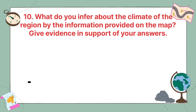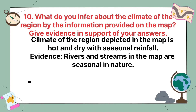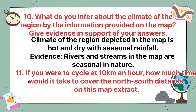What do you infer about the climate of the region by the information provided on the map? Give evidence in support of your answer. The climate of the region depicted in the map is hot and dry with seasonal rainfall. Evidence: the rivers and streams in the map are seasonal in nature.